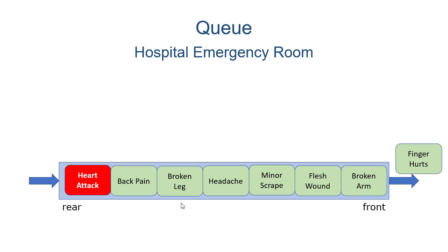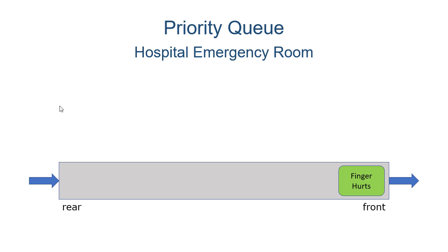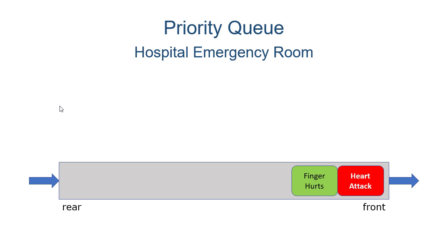They do what's called triage. The idea of triage is to deal with the most urgent medical conditions first. So we can think of a priority queue as a queue that lets you skip the line, assuming you have a higher priority. So if you have an ER where someone's finger hurts and someone comes in with a heart attack, they get to skip in line. Someone comes in with a headache, they go to the end of the line because they're low priority.